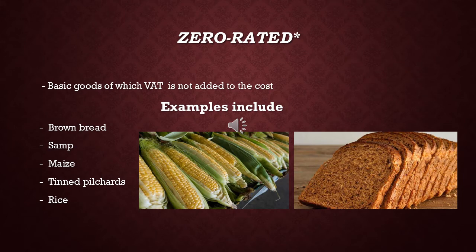There are some goods which are exceptions to the VAT system, meaning that VAT is not charged on these goods — they are exclusive of VAT. This includes brown bread, maize meal, tinned pilchards, and rice, but the list is not limited to these items and is always being updated every tax year, so you'll want to keep updated with that list each financial year.